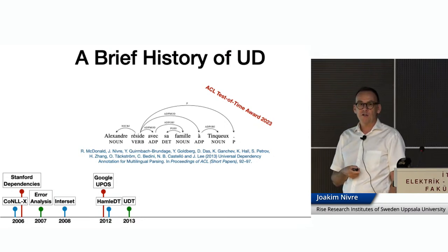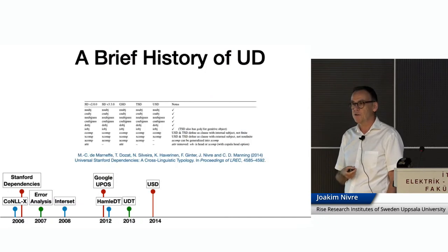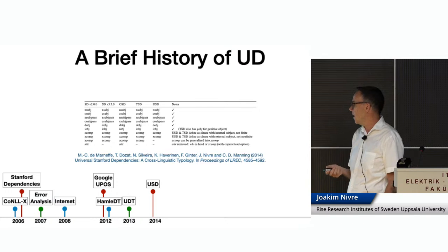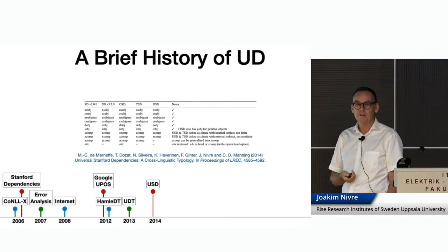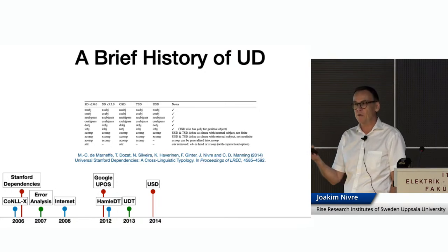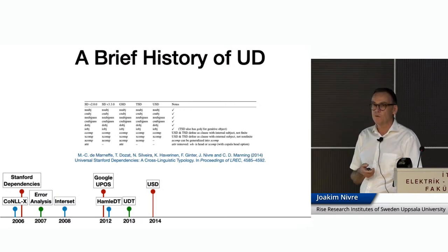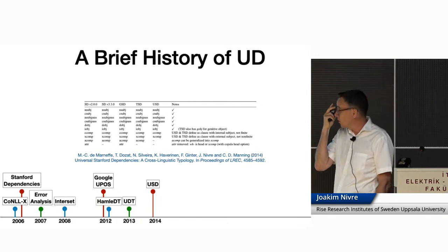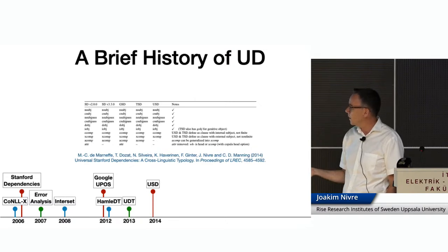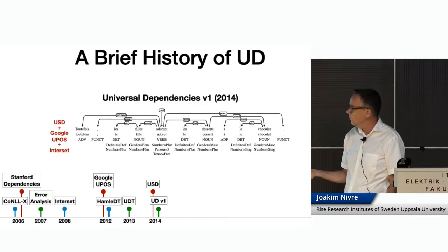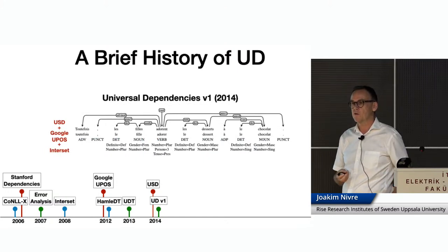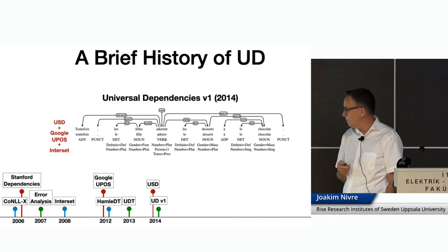This immediately prompted a reaction from our colleagues at Stanford, in particular Marie de Marneffe and Chris Manning, who liked the idea of universal Stanford dependencies but didn't quite like some of the decisions we had made. Eventually, I got hijacked into being co-author of a paper that proposed the universal Stanford dependencies. At this point, some of us said we need to get together, stop developing alternative universal schemes, and sit down around a table and agree on something. That's what we did. Later in 2014, we issued the first version of the guidelines of Universal Dependencies, integrating the universal Stanford dependencies, the Google universal part-of-speech tags, and the inter-set morphological features, all revised in various ways.